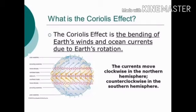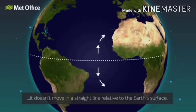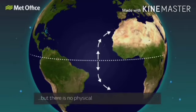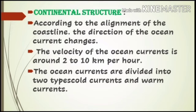Along with those three reasons, there are also other reasons for ocean currents and their velocity. One reason is the rotation of the Earth — because of Earth's rotation, ocean currents move in a clockwise direction in the northern hemisphere and in an anticlockwise direction in the southern hemisphere. This effect of Earth's rotation is called the Coriolis effect.